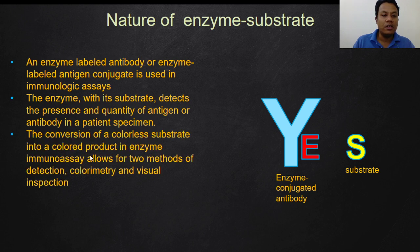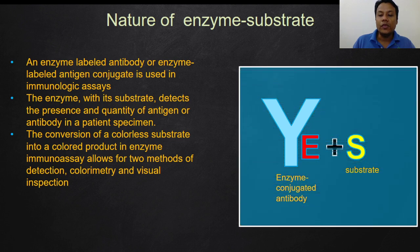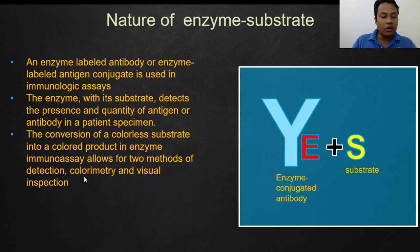How do they detect the quantity? Through the conversion of a colorless substrate. At first the substrate is in a colorless state, but when it meets its respective enzyme, it produces a colored product. This allows for methods of detection either by colorimetry — using an instrument such as a photometer for quantifying the result — or even by visual inspection.